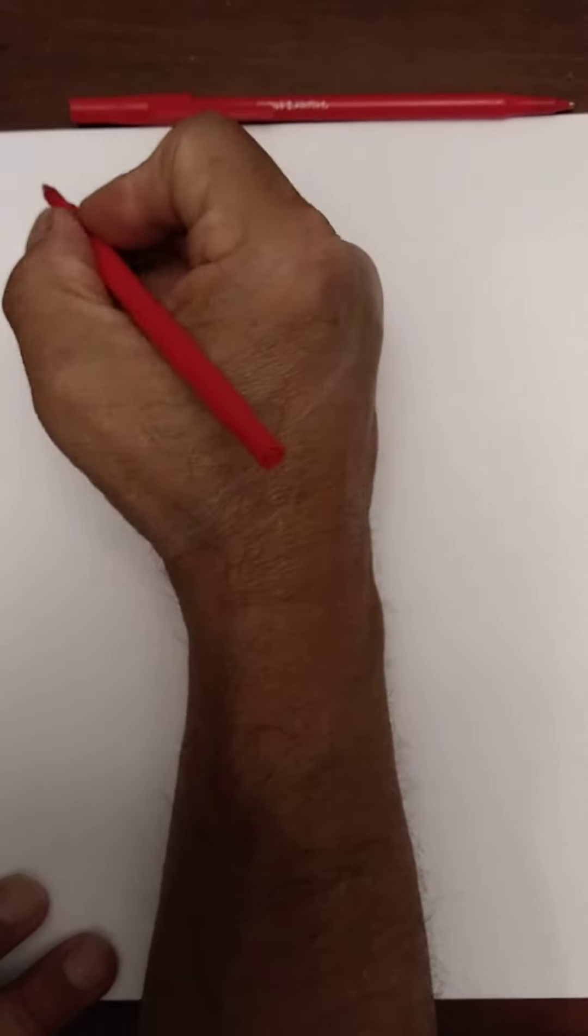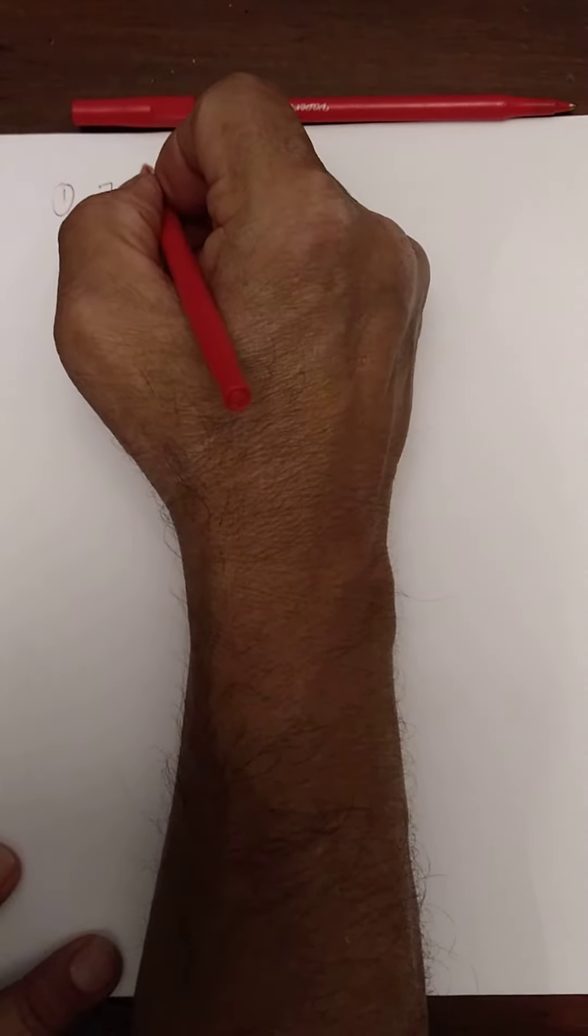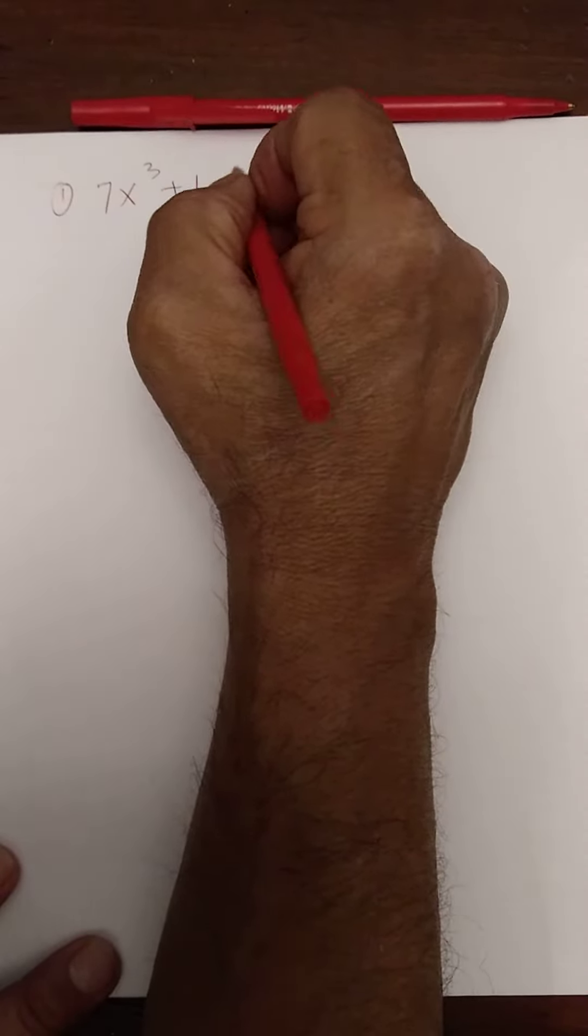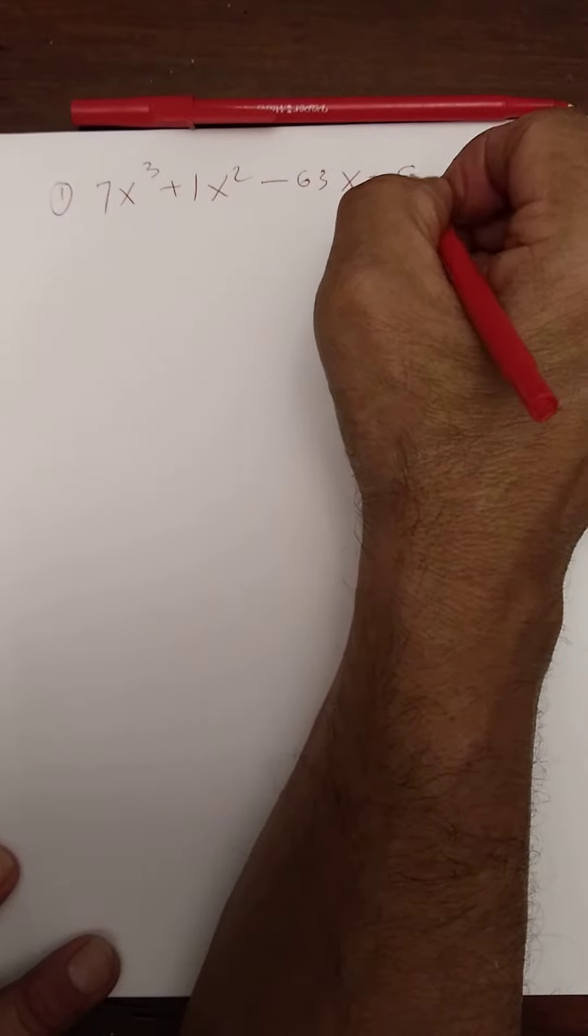Alright, let's solve number one: 7x³ + x² - 63x - 9 = 0.